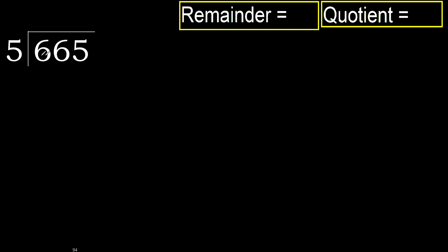665 divided by 5. 6 is not less, therefore with 6 — 5 multiplied by which number is nearest to 6 but not greater? 5 multiplied by 2 is 10, which is greater. 5 multiplied by 1 is 5, which is not greater. Ok, subtract.